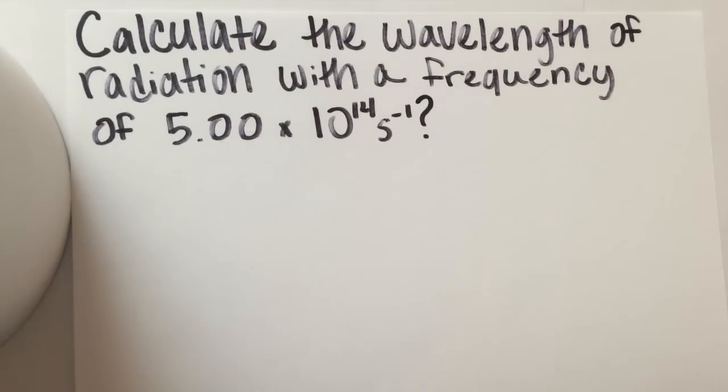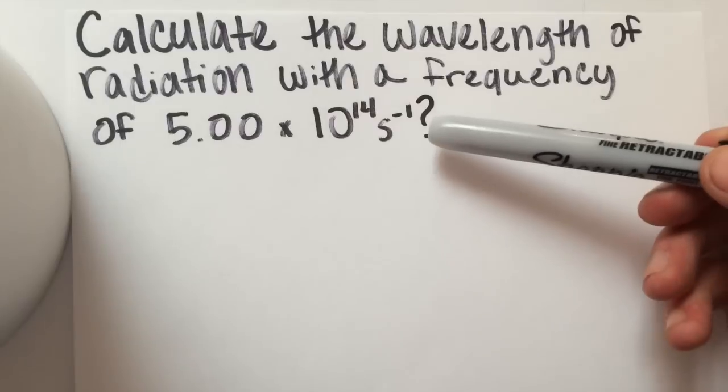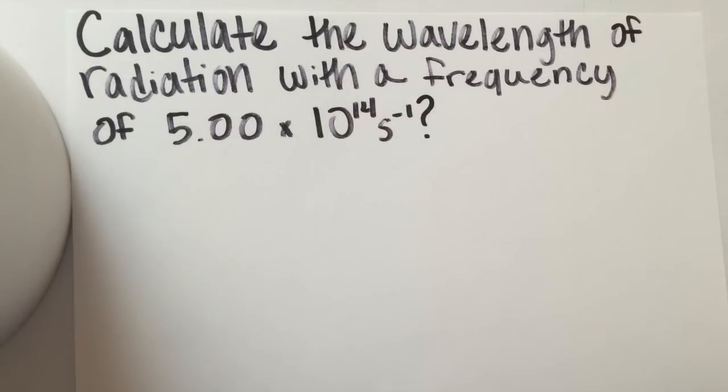Calculate the wavelength of radiation with a frequency of 5.00 times 10 to the 14th seconds to the minus 1. So seconds to the minus 1 is the same thing as hertz. We're finding wavelength once again, so it is the speed of light divided by your frequency.